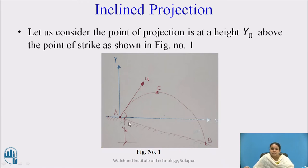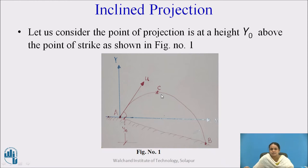The difference between point A and B is denoted by y₀, which is the height between the starting point and the strike point of the particle. Point C is the maximum height reached by the particle.